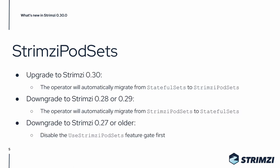When upgrading to StreamC 0.30, the operator will automatically migrate from StatefulSets to StreamC PodSets. Similarly, when downgrading to StreamC 0.28 or 0.29, the operator will automatically migrate back from StreamC PodSets to StatefulSets. Only when downgrading to StreamC 0.27 or older, you first need to disable the useStreamC PodSets feature gate and only then do the downgrade.